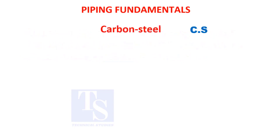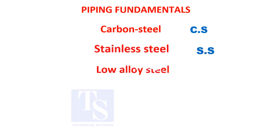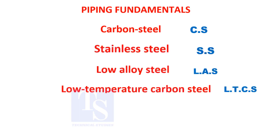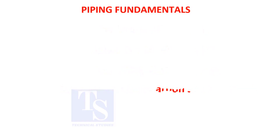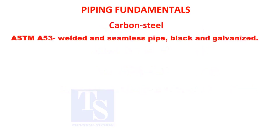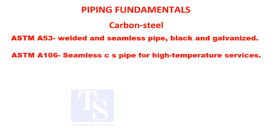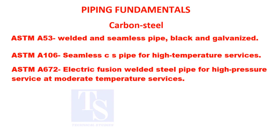Generally used piping materials are carbon steel, stainless steel, low alloy steel, and low temperature carbon steel. ASTM A-53: welded and seamless pipe, black and galvanized. ASTM A-106: seamless CS pipe for high temperature services. ASTM A-672: electric fusion welded steel pipe for high pressure and moderate temperature services.